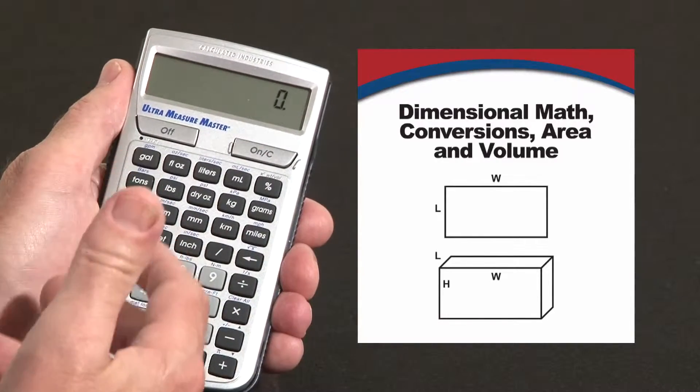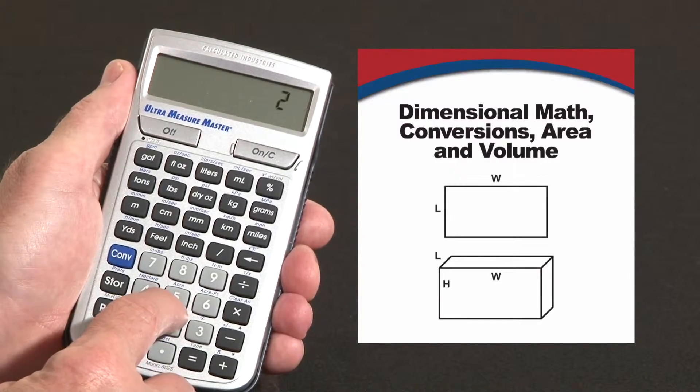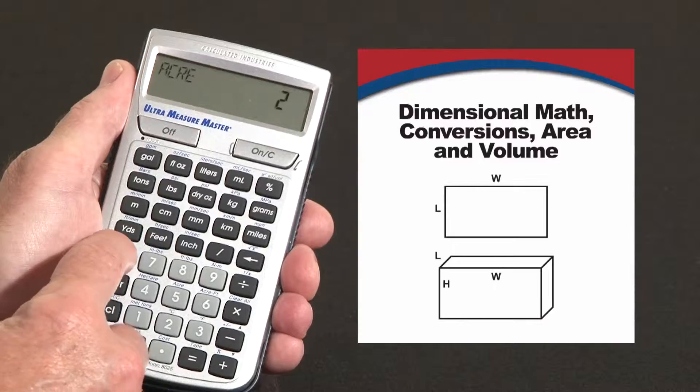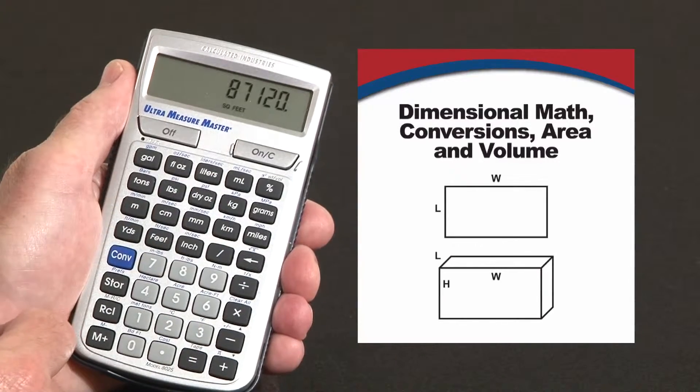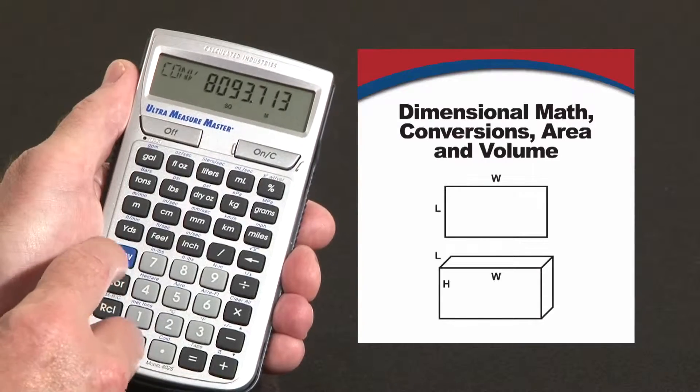You can even enter large areas like acres. Say two - over the five key it says acres, I hit convert acres, two acres convert to feet. Well that's 87,120 square feet. Or how many meters is it? Or you can convert to hectares.